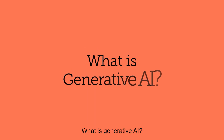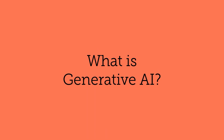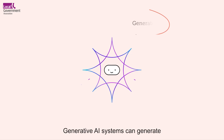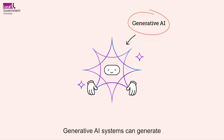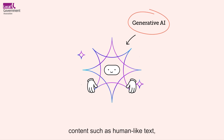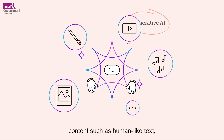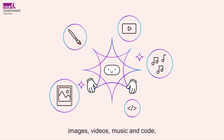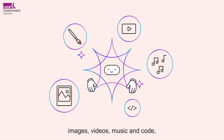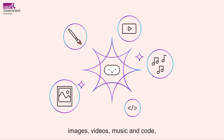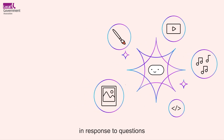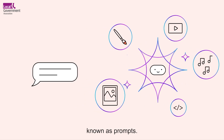What is generative AI? Generative AI systems can generate content such as human-like text, images, videos, music and code in response to questions known as prompts.